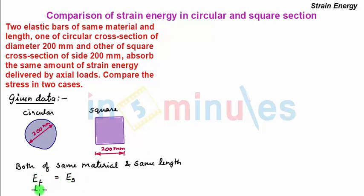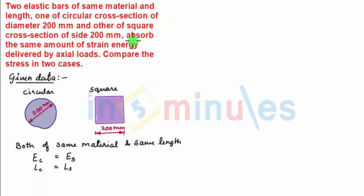Also since the length is same, we have L_C equal to L_S. It is also given that both bars absorb same amount of strain energy. So, we have U_C, which is strain energy absorbed by circular section, is same as U_S, which is strain energy absorbed by square section.